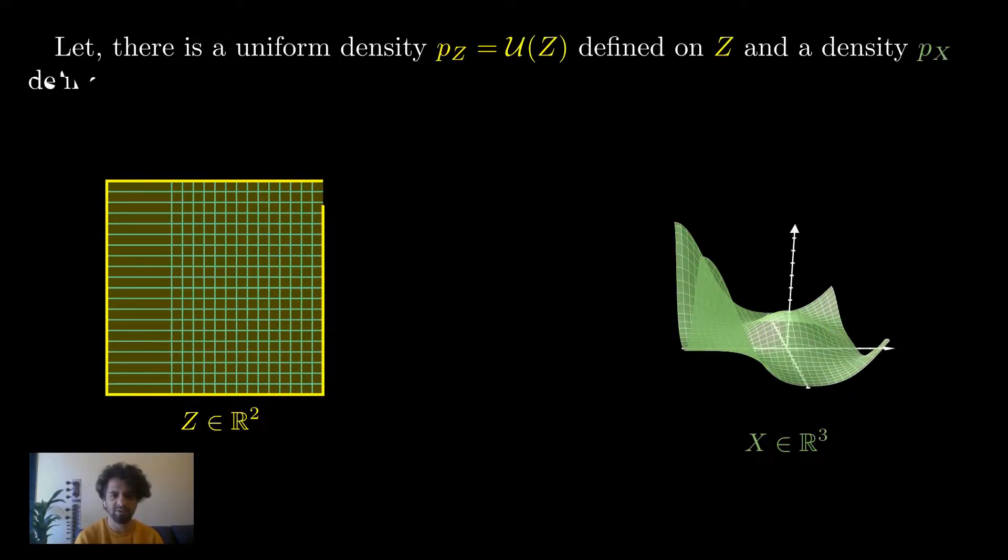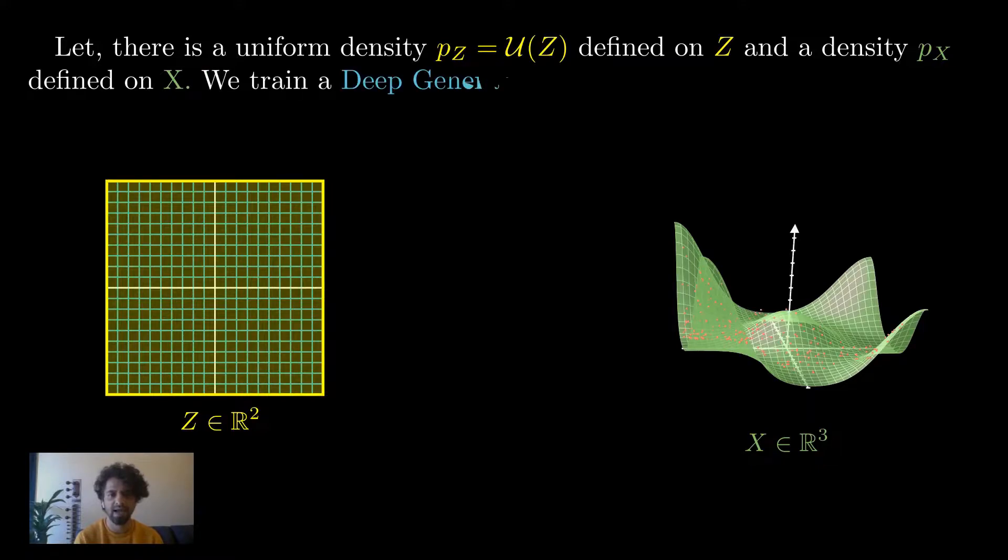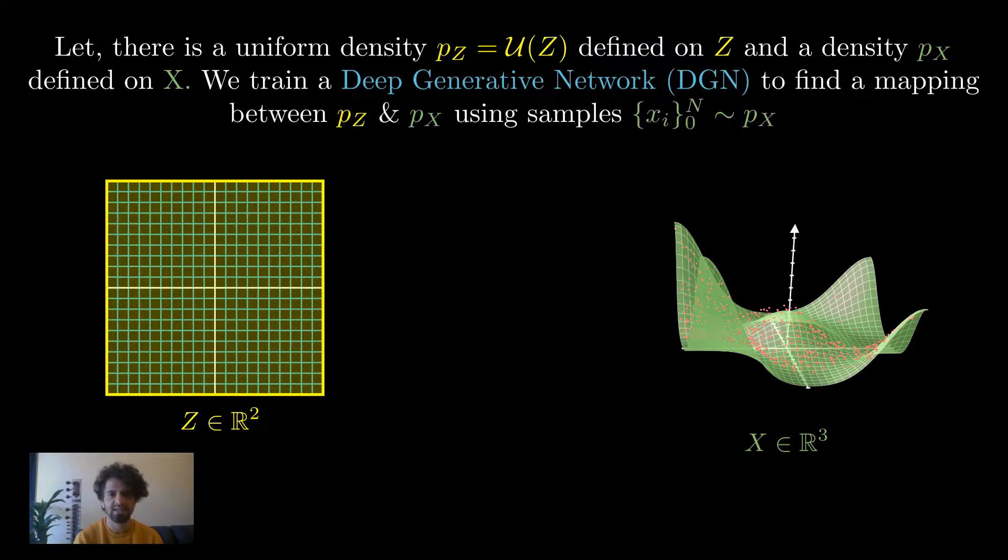Suppose we now have a uniform density p_z on z and a density p_x on x that we observe via n training samples. We are training a deep generative network to map z to x. Note that p_x here is not uniform since parts of the manifold are sampled more than the others.